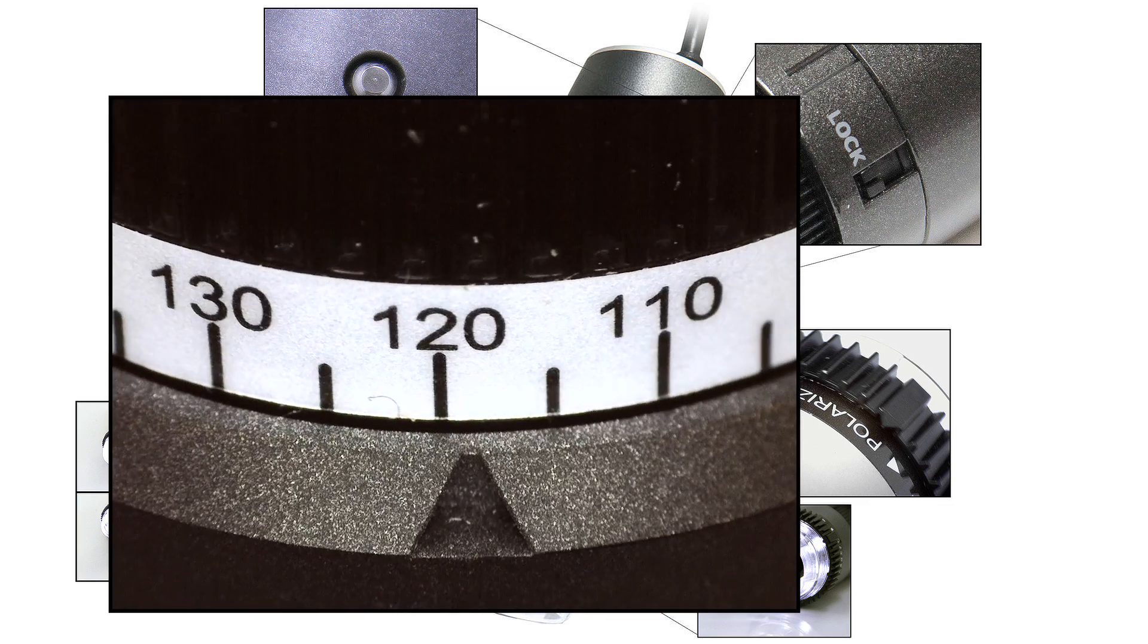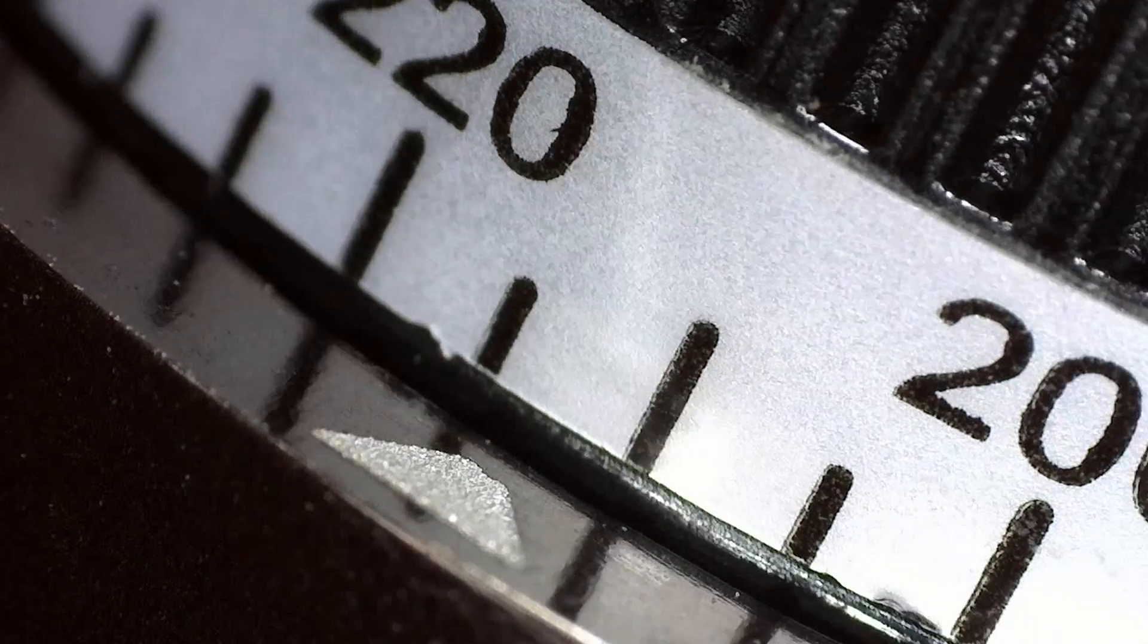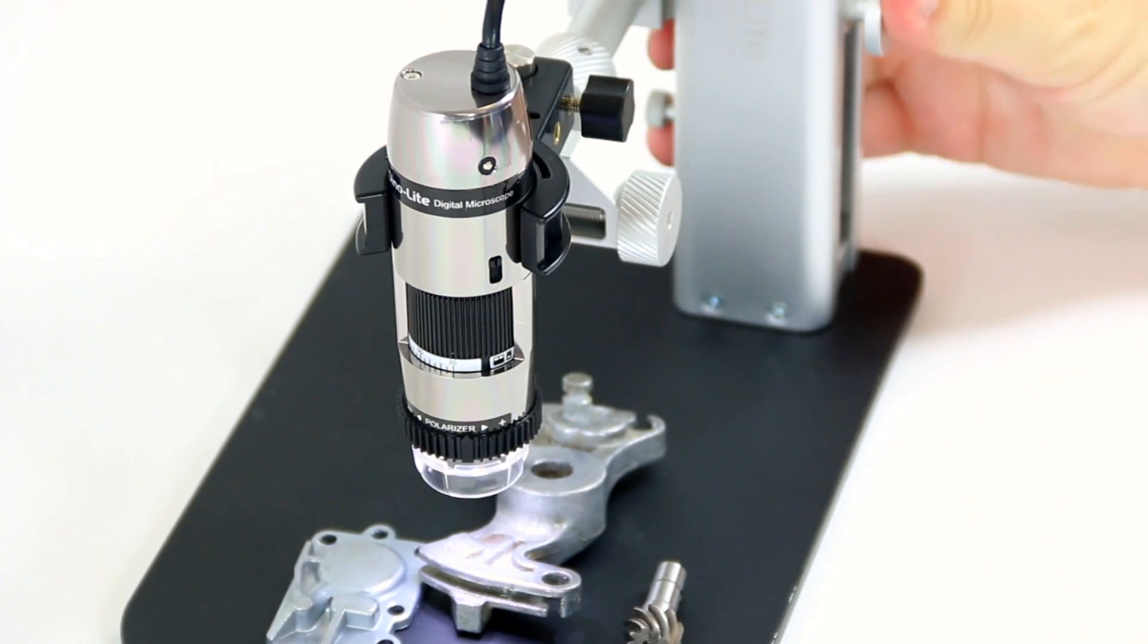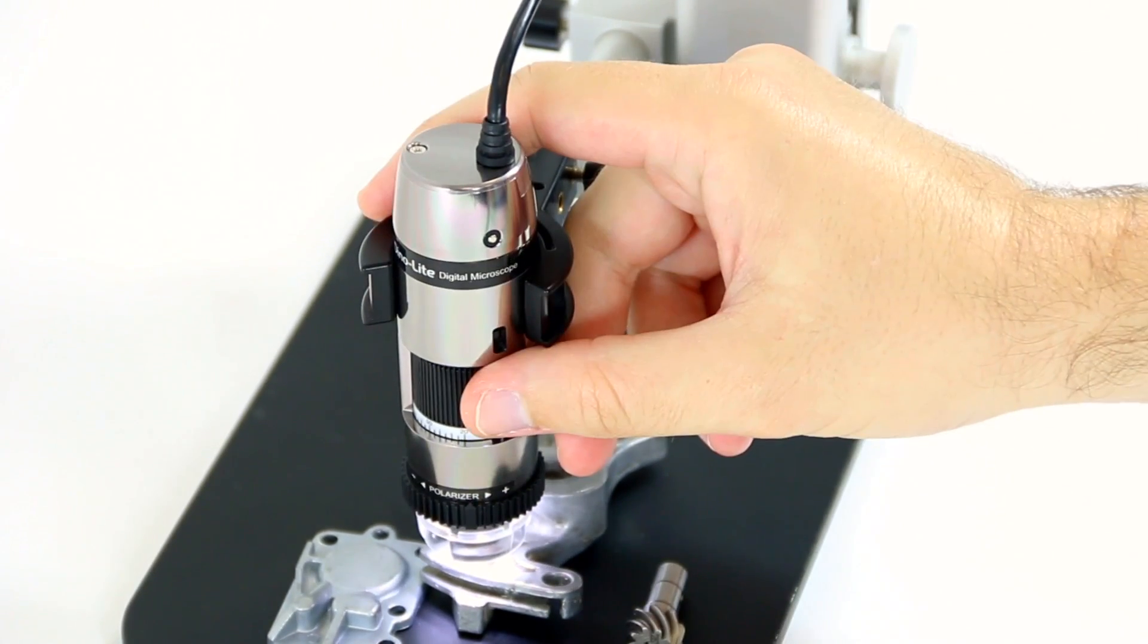Like a traditional microscope or camera lens, Dynolite microscopes focus based on the magnification and distance to the subject being viewed. This is known as the working distance.